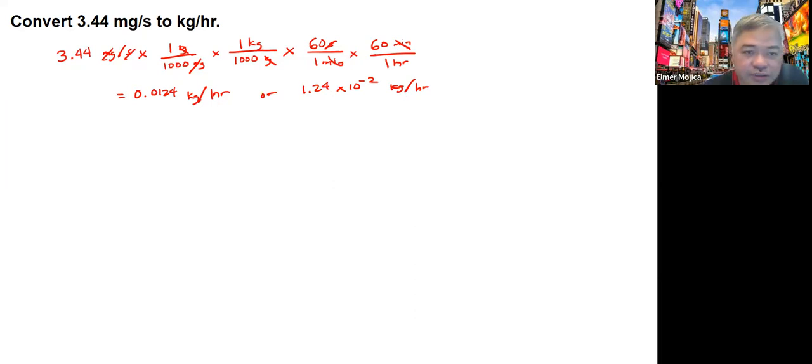Now another problem: if the density of an object is 2.87 times 10 to the negative 4 pounds per cubic inch, what is its density in grams per mL? We can start with the given, 2.87 times 10 to the negative 4 pounds per cubic inch.